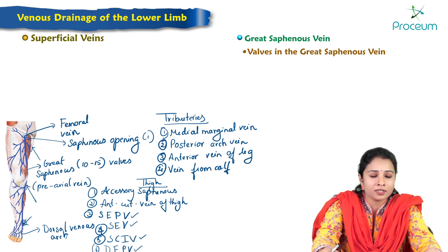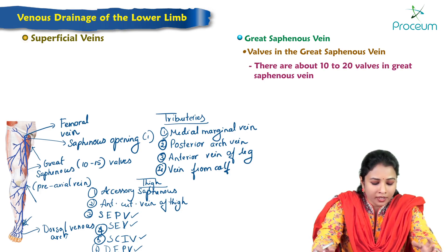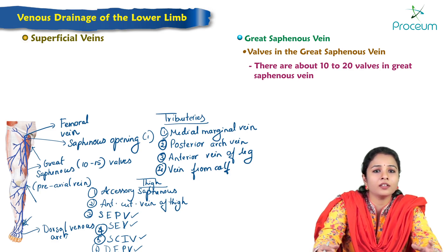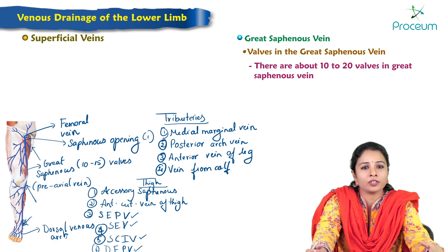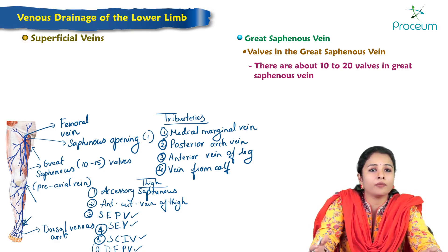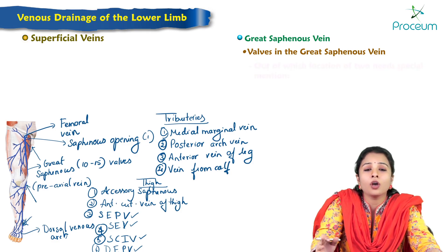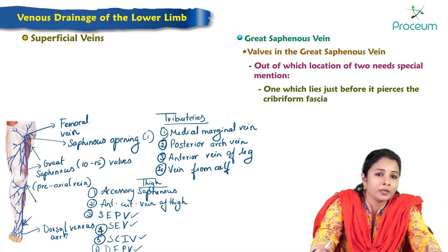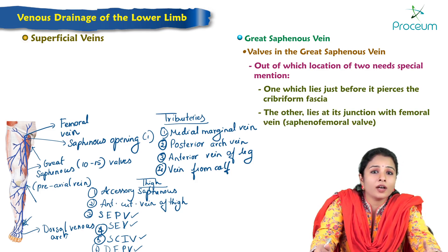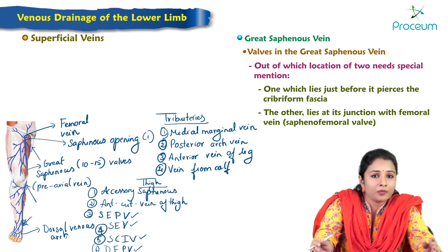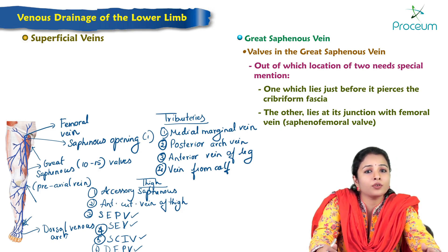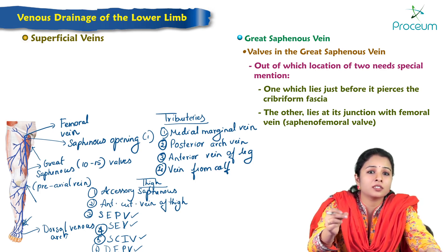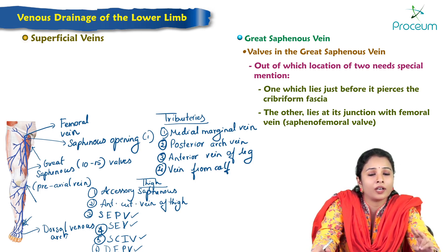Regarding the valves of the great saphenous vein: approximately 10 to 20 valves are present, varying between individuals. The location of two valves deserves special mention. One valve lies just before it pierces the cribriform fascia, and the other lies at the junction between the saphenous vein and femoral vein, called the saphenofemoral valve.